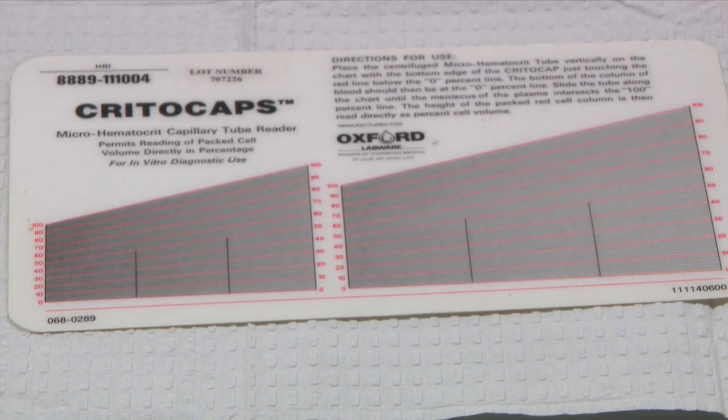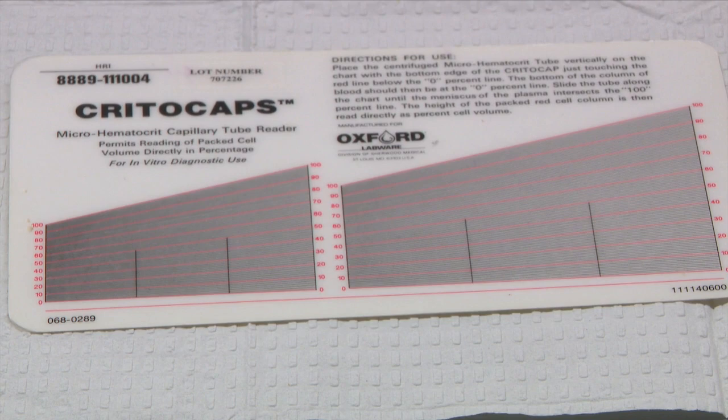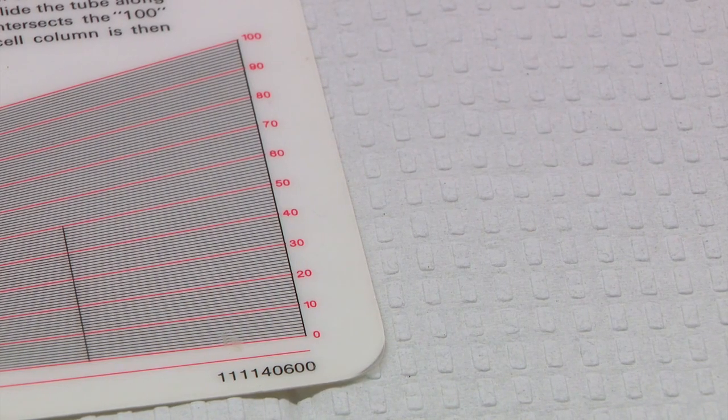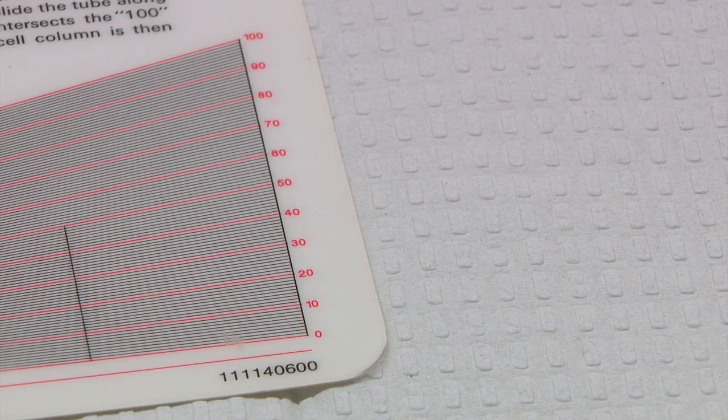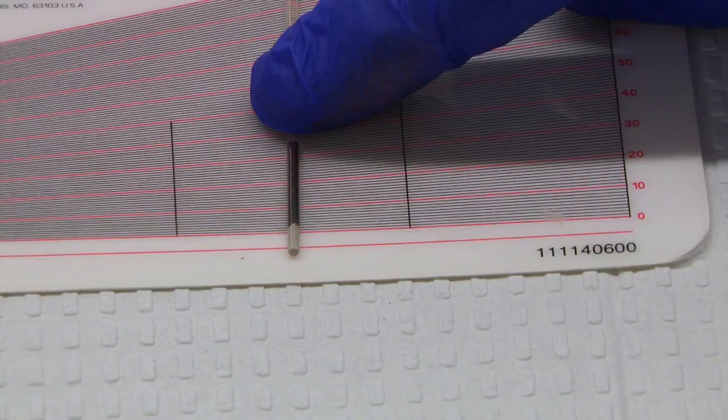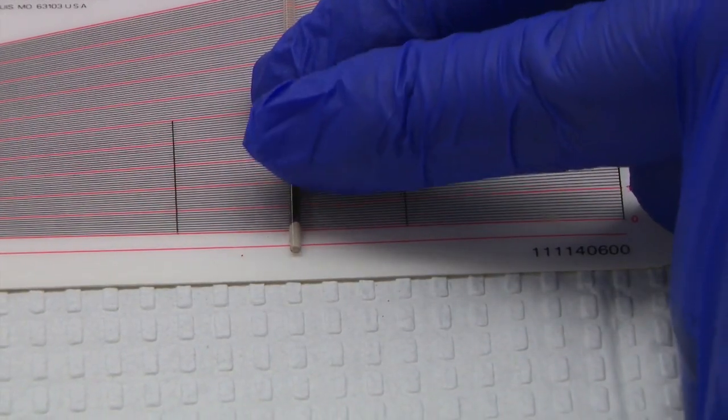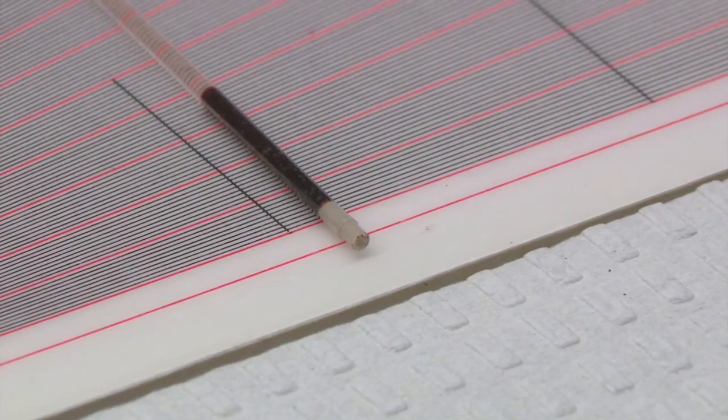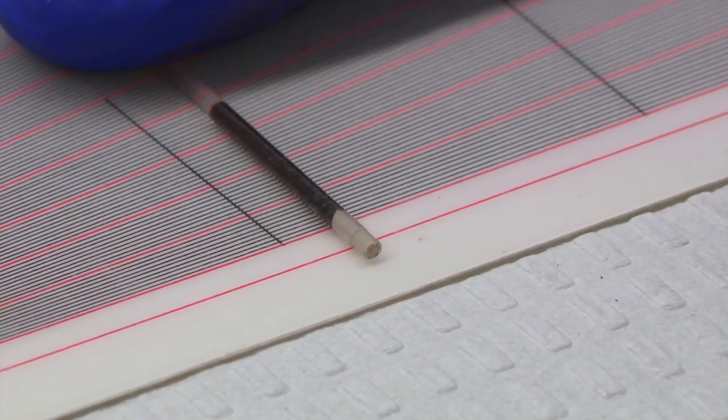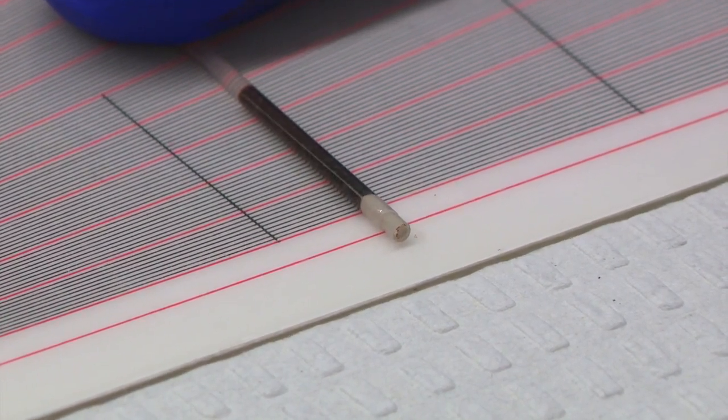However, if there is a low volume, the chart on the left would be used. Notice on the reader there is a zero mark at the bottom and a 100 mark at the top. To begin reading the tubes, lay the reader flat on the table and align the area of the hematocrit tube where the packed red cells and the clay meet at the zero mark.